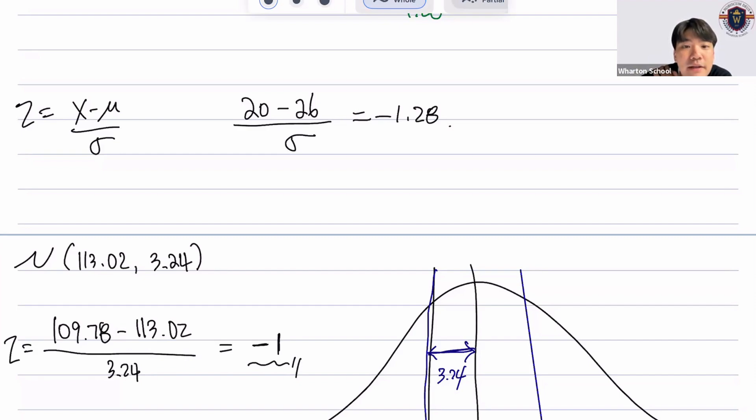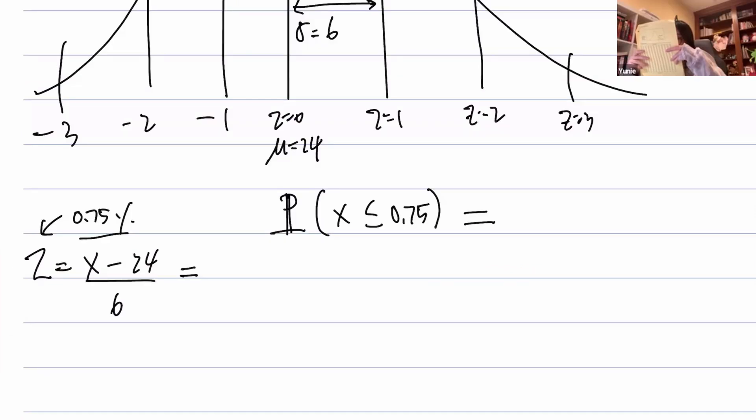So you would have to find the percentage, the value that is less than 109.78. So we have one, two, only two. 0.68? Yep, 0.68, right?